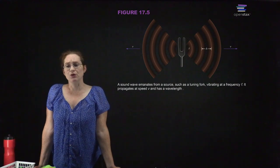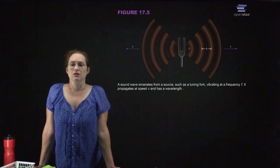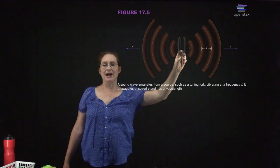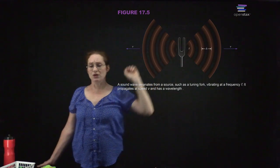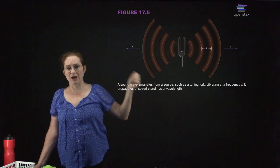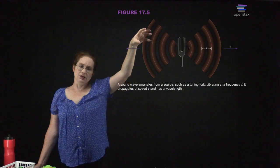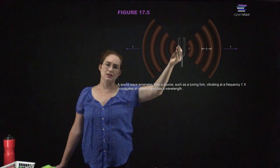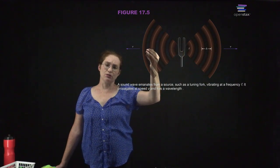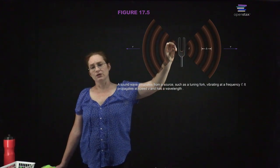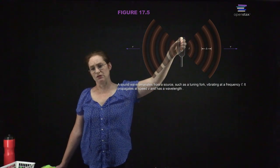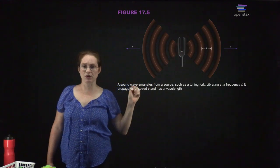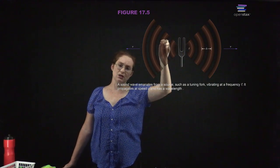An example is a tuning fork. If you hit a tuning fork, it starts vibrating. It is shaped in a special way so that it has a resonance, and when you smack it, it starts vibrating at that resonance. When you have a tuning fork that has been smacked, it emanates a sound wave at a certain frequency, where the frequency is determined by the resonance of the solid. Whatever frequency the tuning fork is oscillating at, that is the frequency of the sound wave.